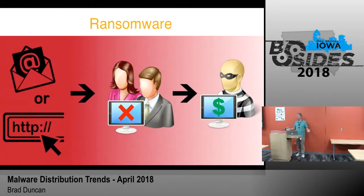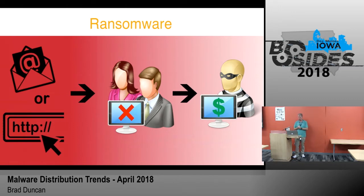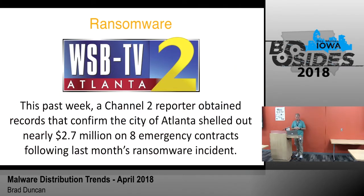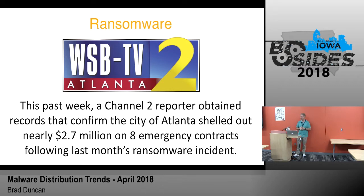We all know what ransomware is by now — you're browsing the web or you get an email and you're a faceless white couple with a computer, and you have to pay money to a faceless criminal that is for some reason still wearing a mask. We've seen a lot of high-profile stories in the past couple of years. The most recent one was in March — the city of Atlanta got hit by ransomware. They didn't specify what type it was, but they think it's SamSam ransomware.